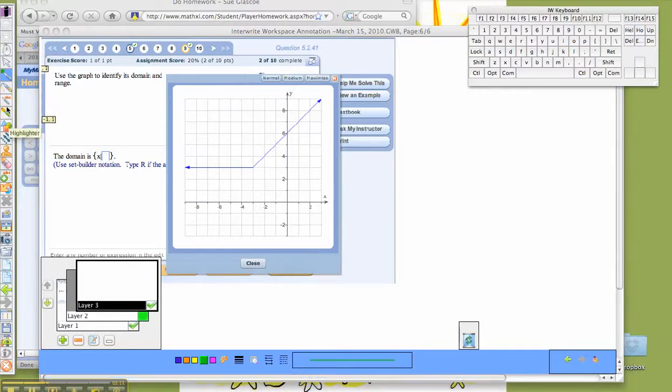And I'm going to say, okay, now range is, let's change colors so I'm in a new color here. Range is how far down this graph goes and how far up the graph goes. Yellow doesn't show up. So how far down the graph goes and how far up the graph goes.